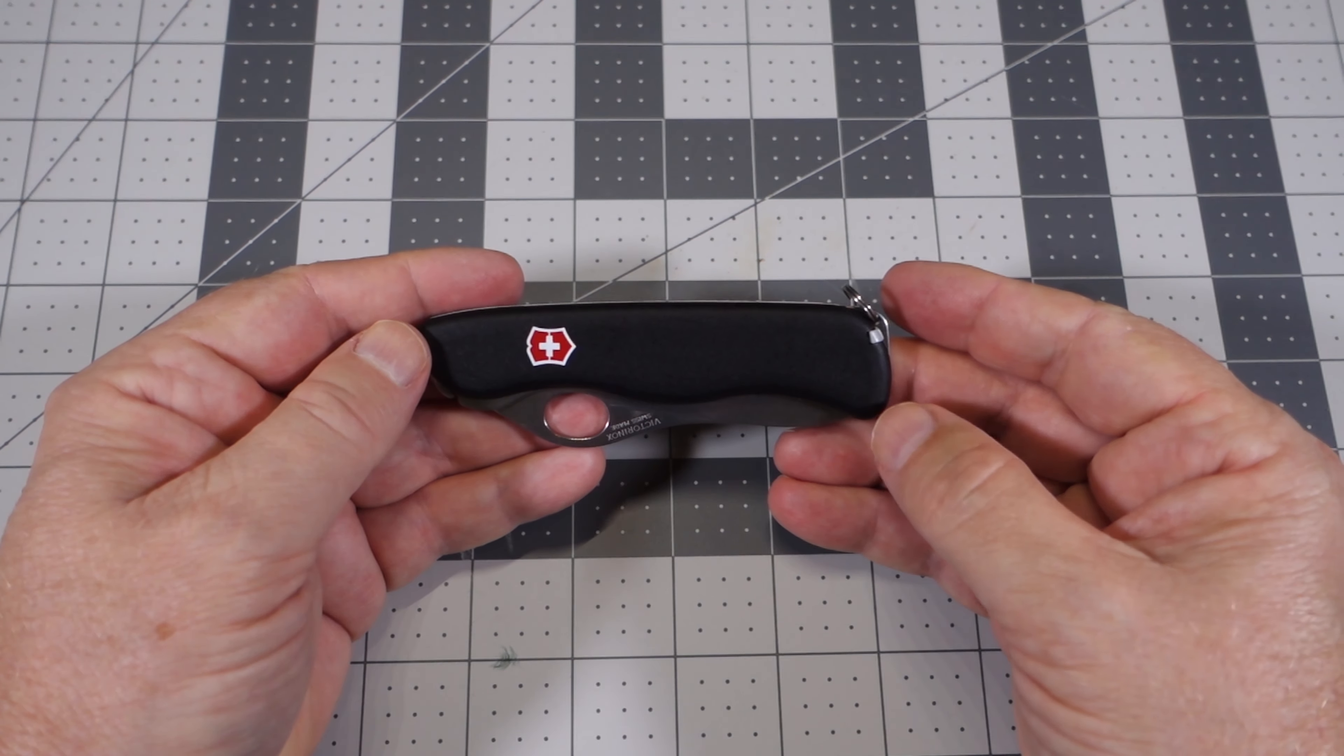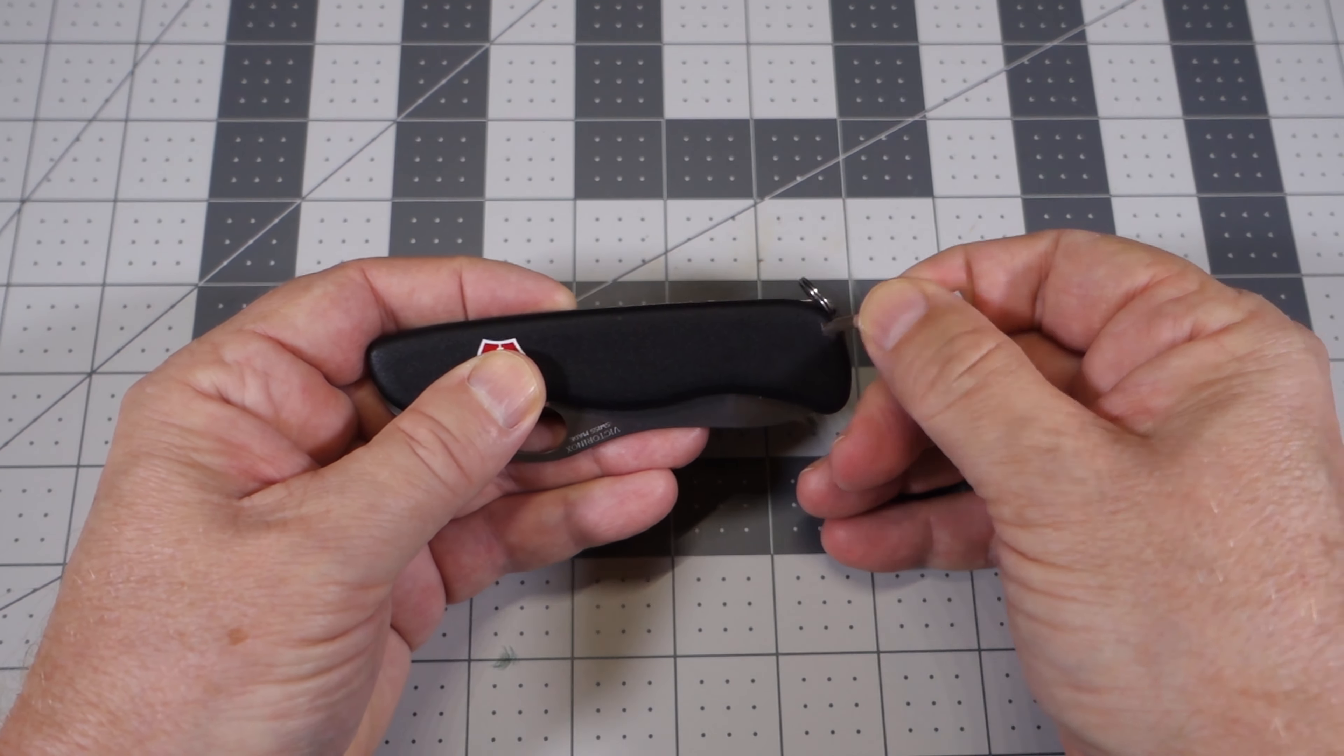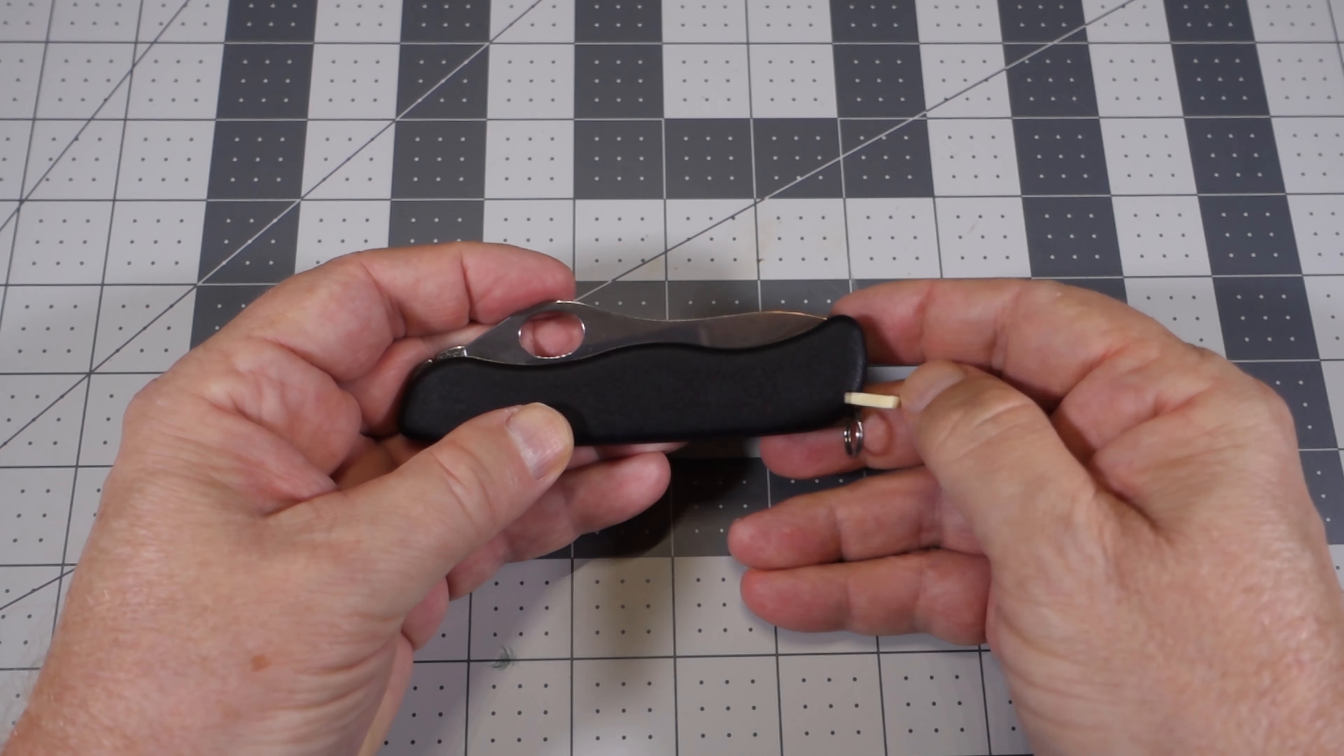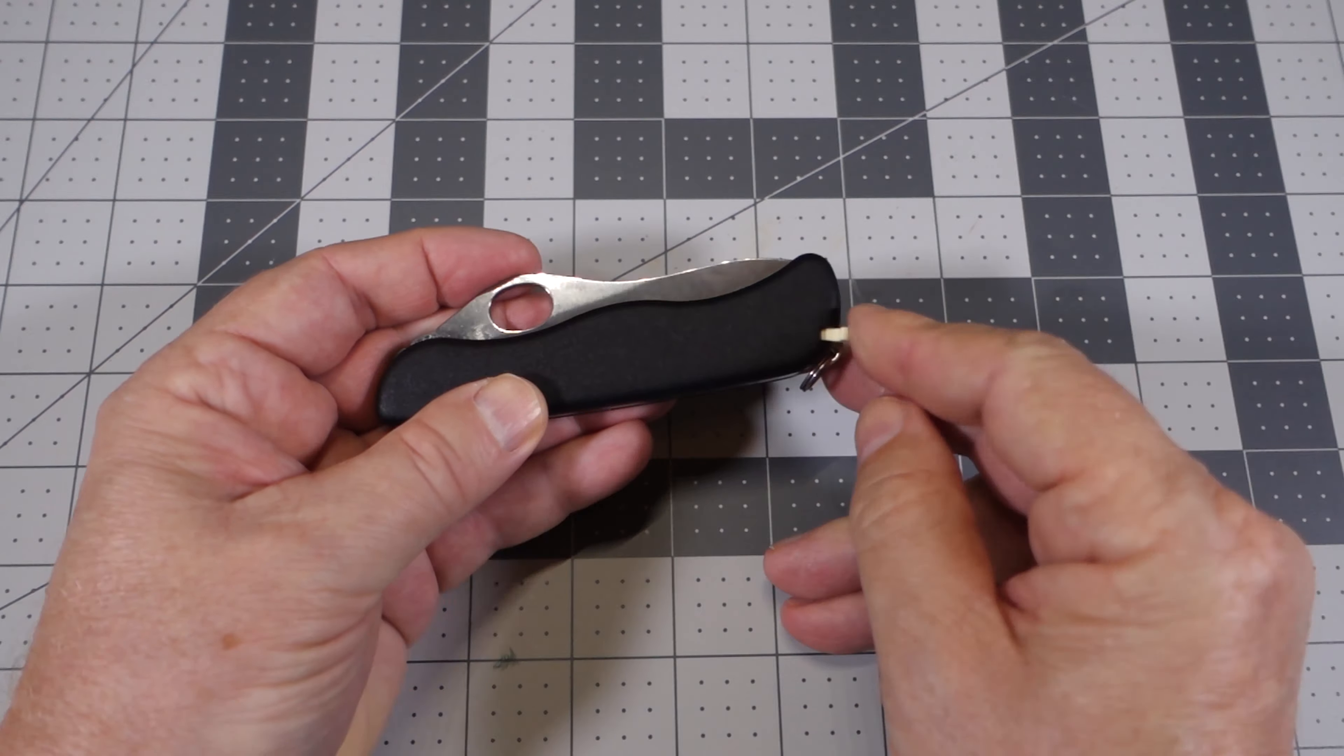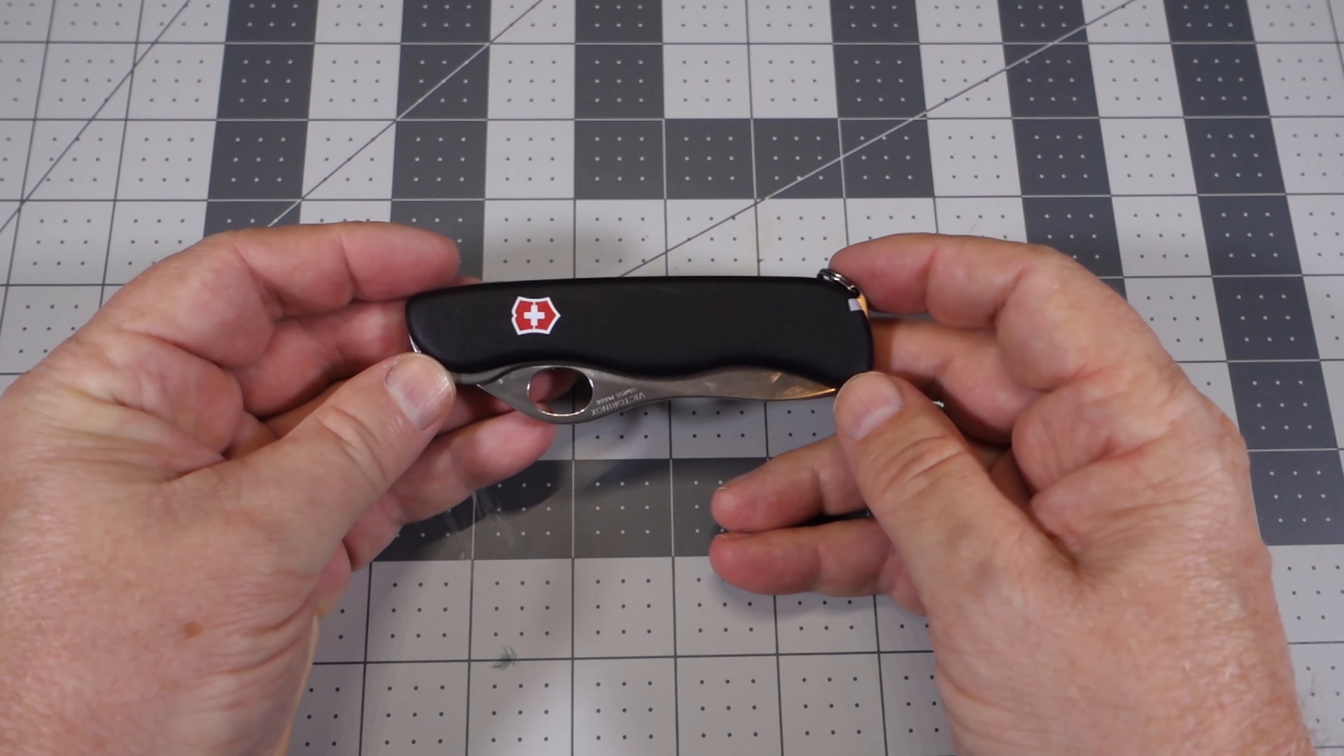So the One Hand Sentinel only comes with two tools. It has the tweezers on one side and the toothpick on the other side.